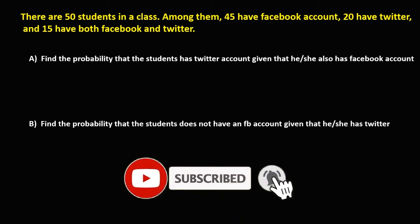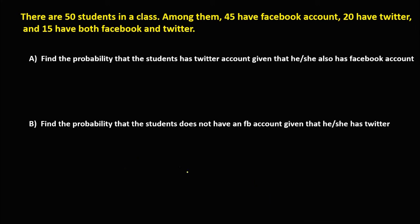Welcome to MathStory app. We're going to solve this problem. There are 50 students in a class. Among them, 45 have a Facebook account, 20 have a Twitter account, and 15 have both Facebook and Twitter account. Find the probability that a student has a Twitter account given that he or she also has a Facebook account.